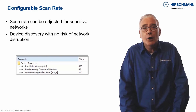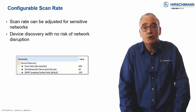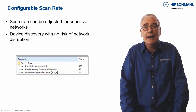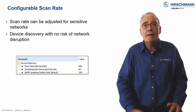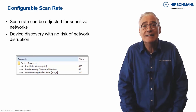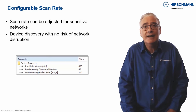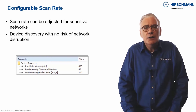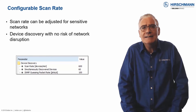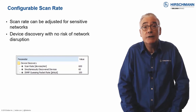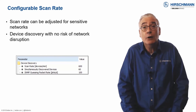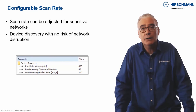Unlike office-grade network management solutions, Industrial HiVision allows discovery traffic to be throttled back to a level which can be accommodated by sensitive industrial devices. So you can be certain that a device discovery scan will not have a negative effect on the applications running on your industrial network.